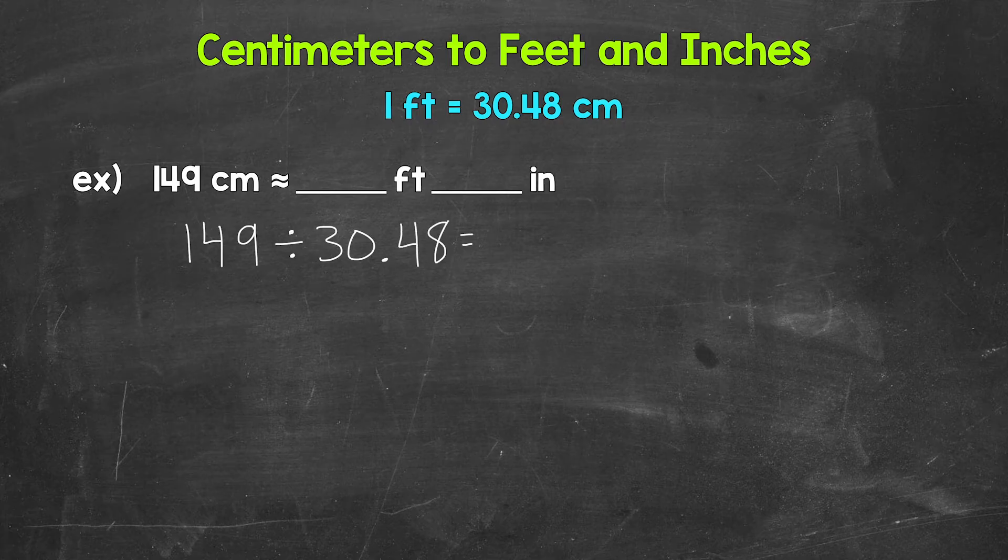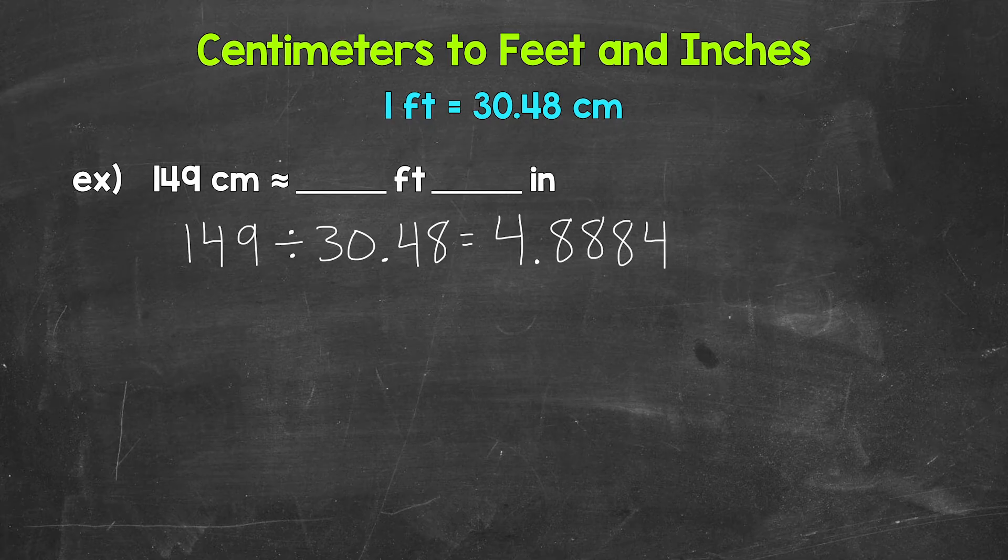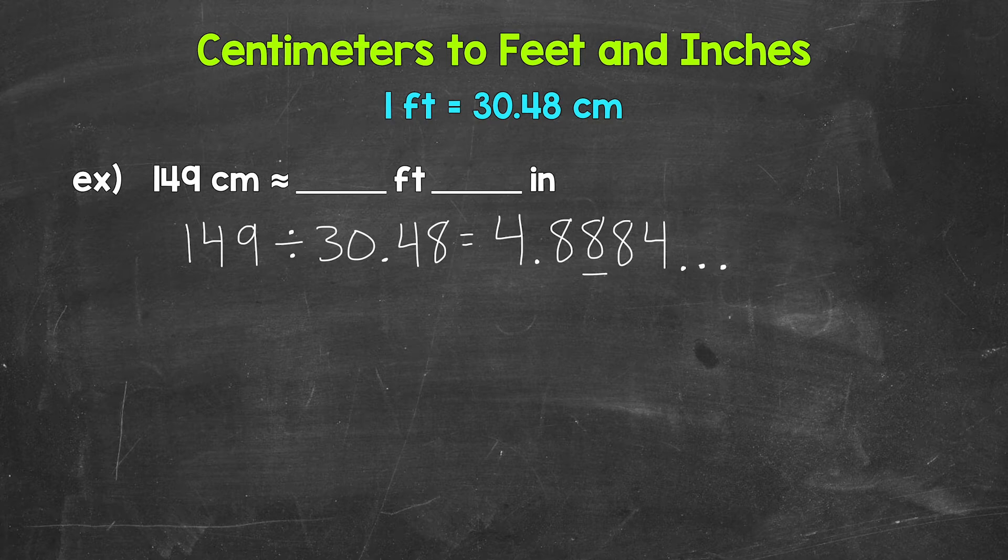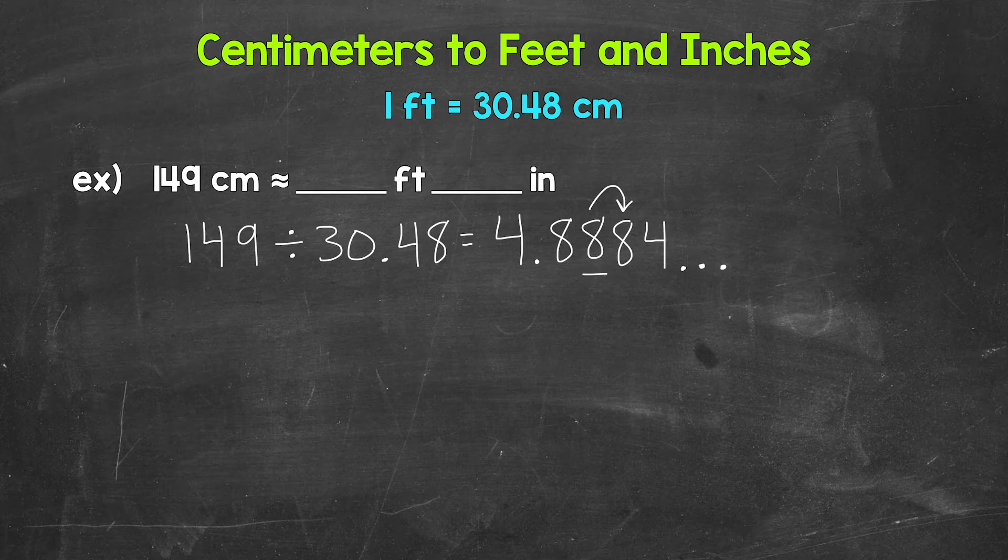When we go from centimeters to feet, we divide by 30.48. Now 149 divided by 30.48 gives us 4.8884. And this decimal continues on, so I'll cut it off there. Let's actually round it to the hundredths place. So we have an eight in the hundredths with an eight in the thousandths. So this rounds up to 4.89.